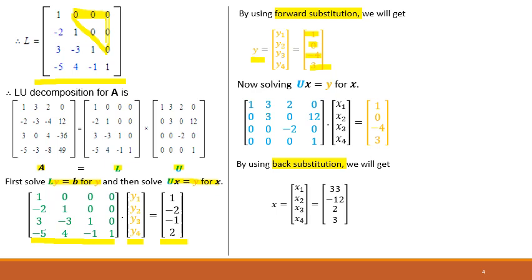We will now use this Y to solve UX equal to Y for X. Our upper triangular matrix U is shown, and matrix X contains the unknown values X1, X2, X3, and X4. Using back substitution, we get the solution where X1 is equal to 33, X2 is equal to minus 12, X3 is equal to 2, and X4 is equal to 3. For more details on forward substitution and back substitution methods, you can watch the previous lecture.